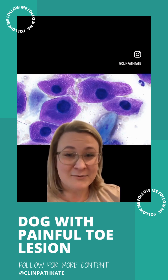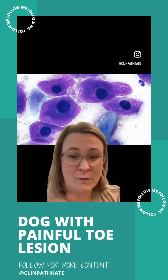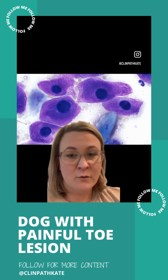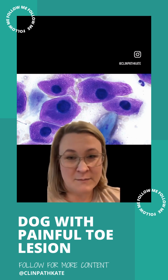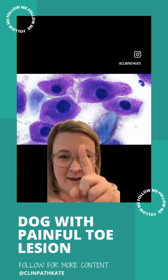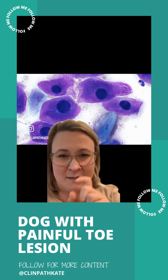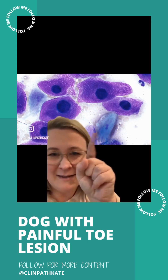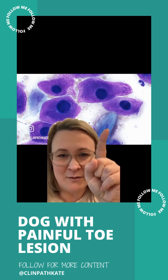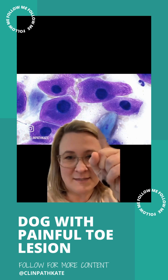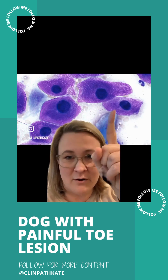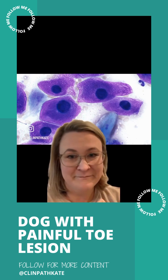One thing you may be wondering is: how can I tell that these are not normal squamous cells? Normal surface squamous epithelial cells look more like this — they have angular borders, this glassy blue cytoplasm, and tiny nuclei — versus these coelocytes, which are much different.